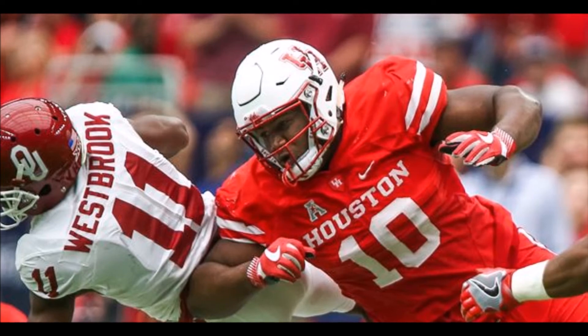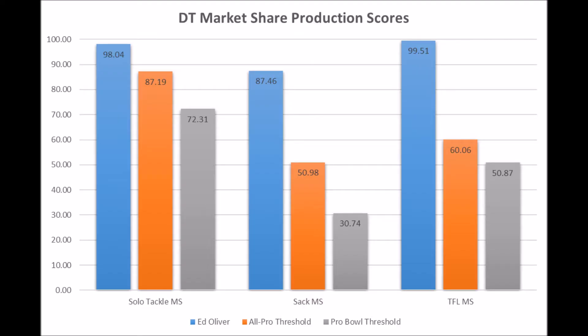Looking at Ed Oliver's production profile, which is right here, Ed Oliver is pretty much ticking all the boxes of a multiple all-pro defensive tackle. He has a 98.04 solo tackle market share score, an 87.46 sack market share score, and a 99.51 tackle for loss market share score. Every single data point, every single production standpoint — solo tackle data, sack data, TFL data — checks all the boxes. He just demolishes the boxes.